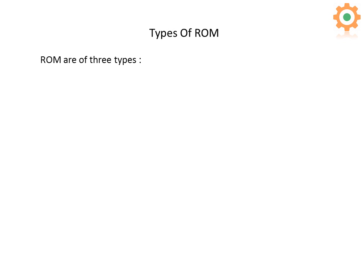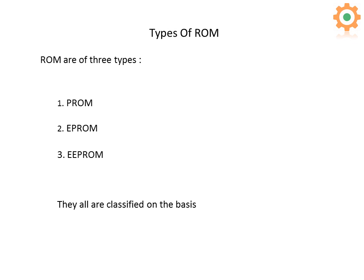Now let's discuss the types of ROM. There are three types of ROM. The first is PROM, the second is EPROM, and the third is EEPROM. They are all classified on the basis of how data is stored on them.